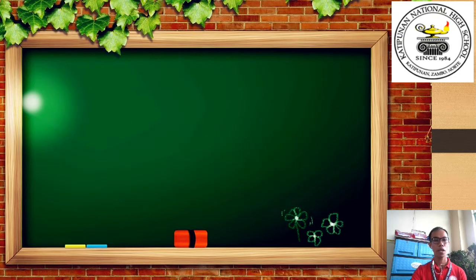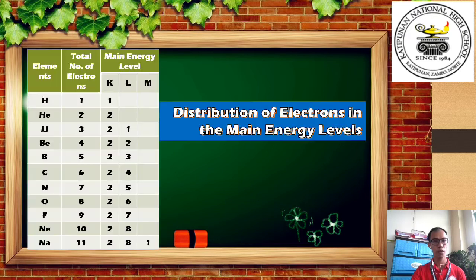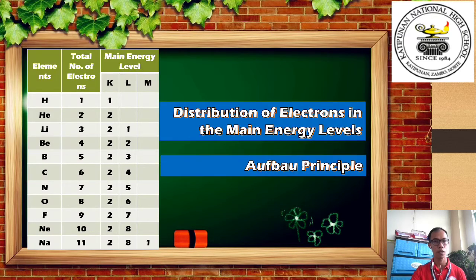There are many ways of arranging or distributing electrons in the energy level of an atom of an element. One way is through the Aufbau principle, which states that as soon as an energy level is filled with electrons, other electrons are moved to the outer energy level.